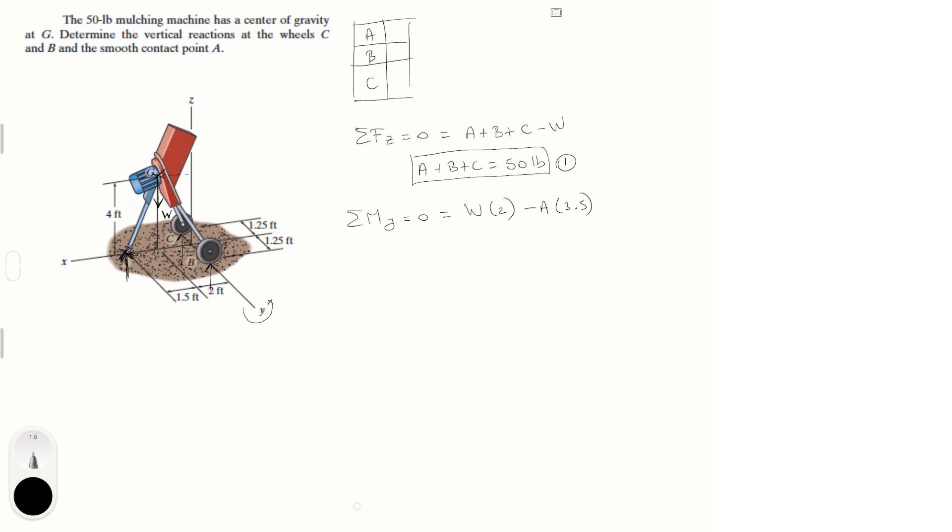And it is negative because the weight is positive because it's trying to turn this whole thing counterclockwise, so counterclockwise is positive. This is trying to turn it counterclockwise so that's why the weight is positive and A is trying to turn it clockwise that's why it's negative.